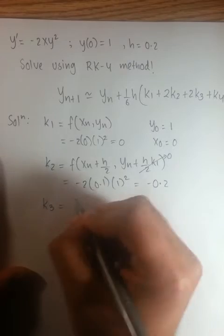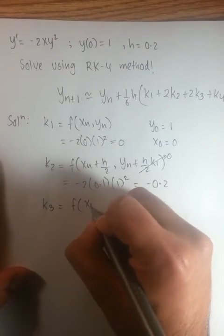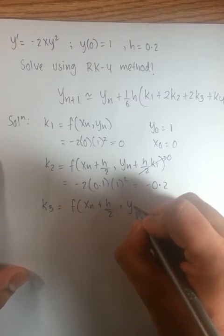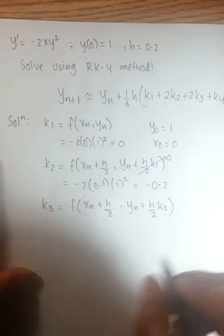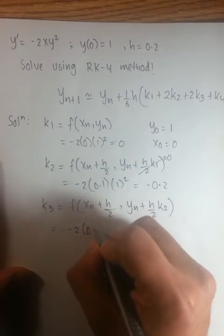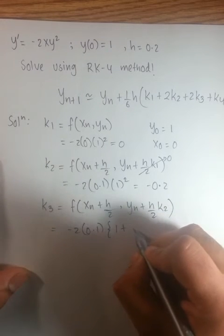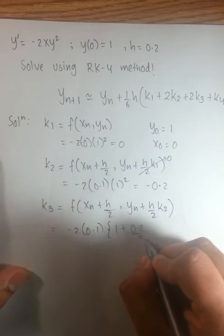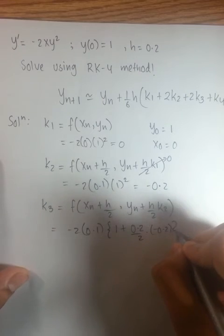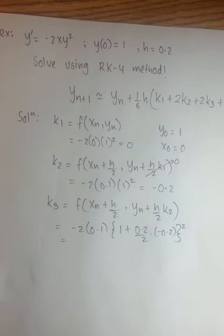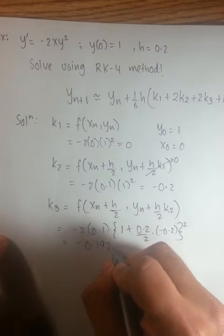And now, we are trying to find k3 value. The formula says it is a function of xn plus half h and yn plus half h times k2. This is negative 2 times 0.1 again. And your y value is 1 plus 0.2 over 2 times negative 0.2. And this value turns out to be negative 0.19208.